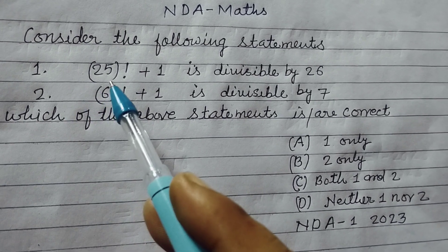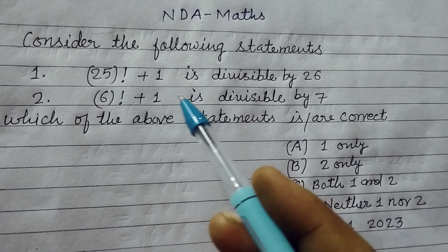Consider the following statements. First is factorial 25 plus 1 is divisible by 26.